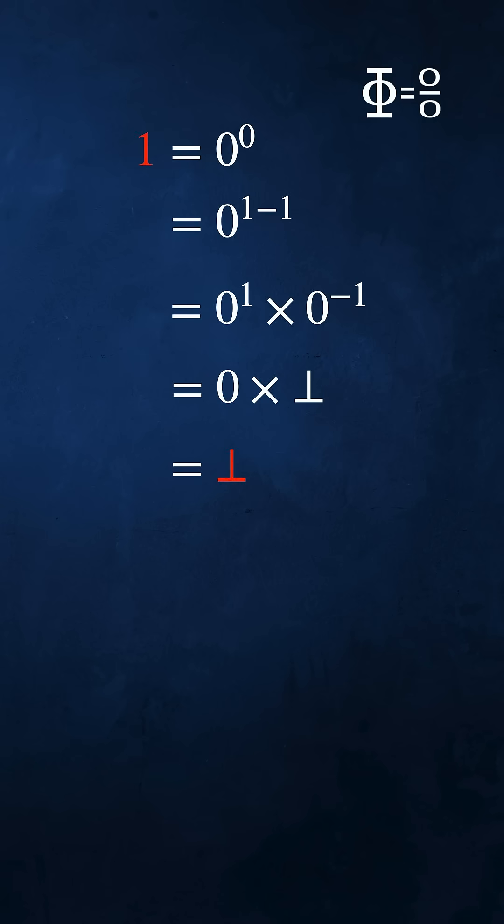If this isn't a contradiction, we've just said that 1 is undefined and now any number times 1 is equal to that number and every number is undefined. This is really bad.